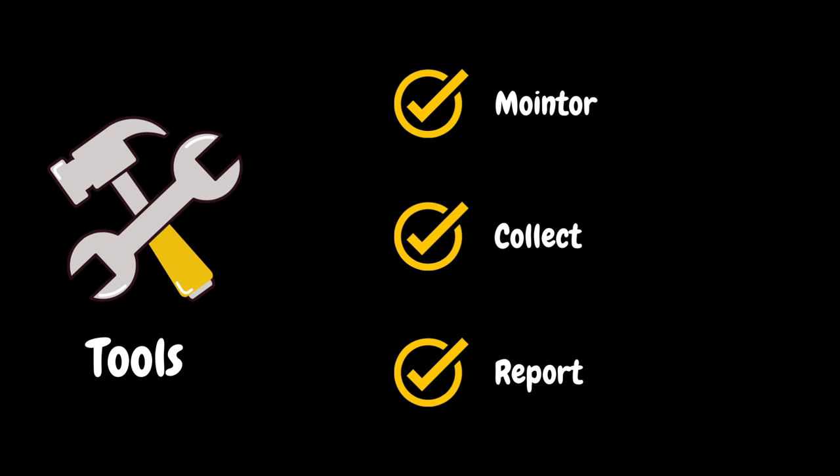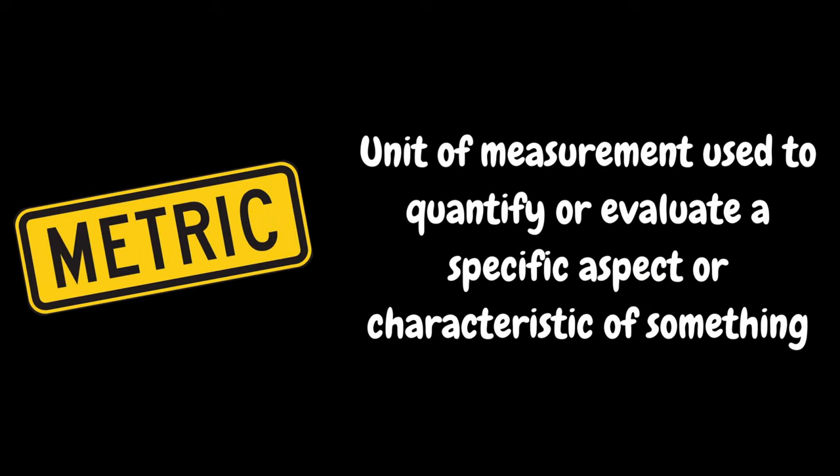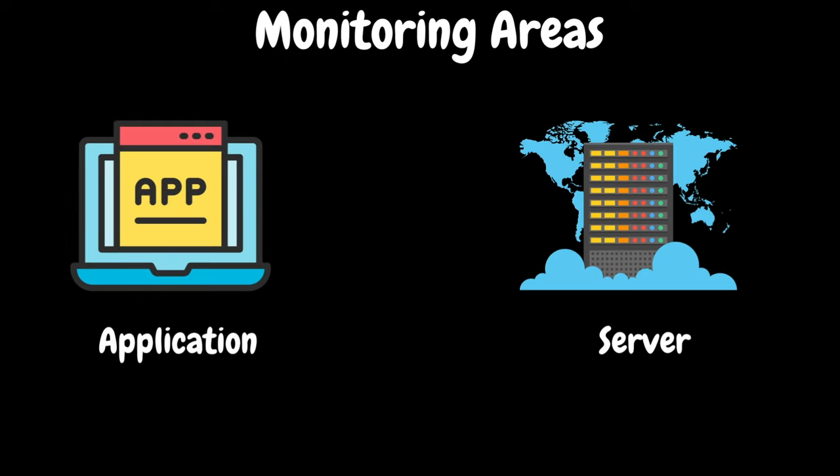You may have a doubt about what a metric is. A metric is a unit of measurement used to quantify or evaluate a specific aspect or characteristic of something — that is, it quantifies a specific aspect to evaluate performance.